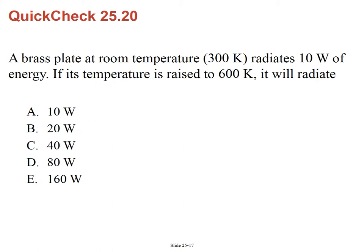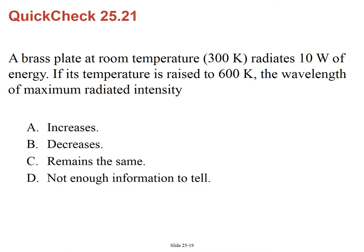Quick check: A brass plate at 300 K radiates 10 watts. If the temperature is raised to 600 K, what is the power? Since power is proportional to T⁴, doubling the temperature increases power by 2⁴ = 16 times, so it goes from 10 to 160 watts. A follow-up question: if temperature increases, does the wavelength of maximum intensity increase, decrease, or remain the same? The answer is it decreases, because wavelength is inversely proportional to temperature.